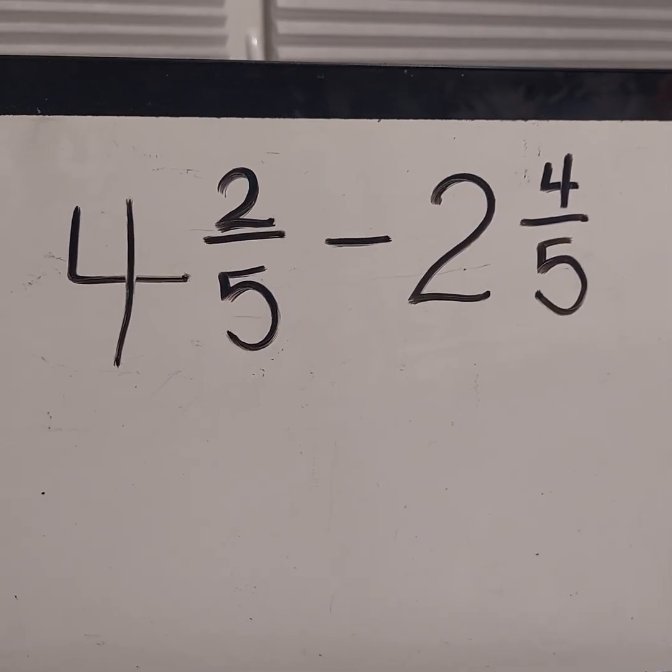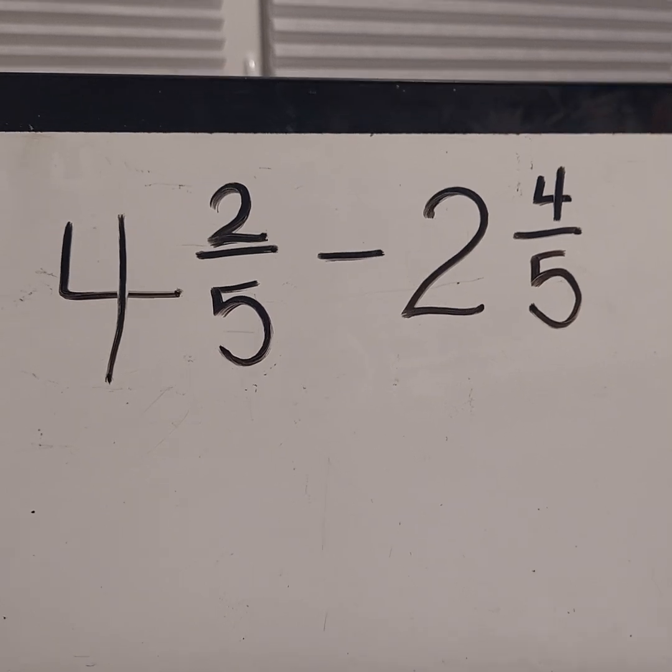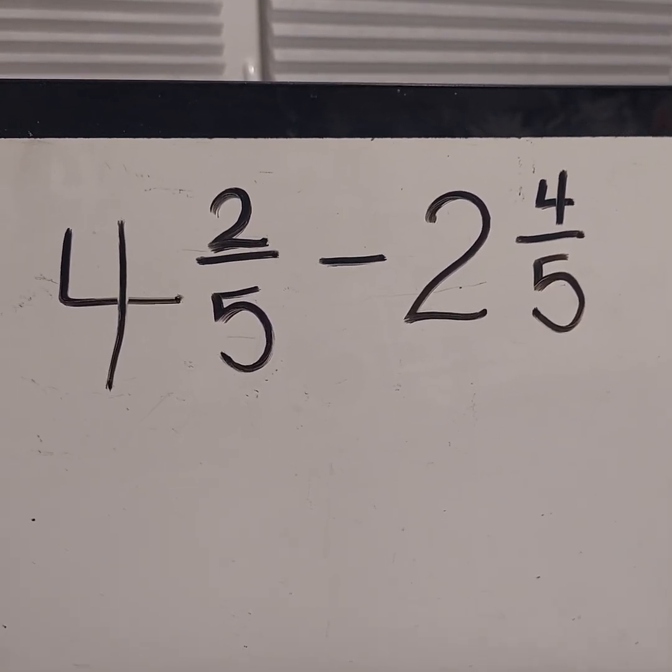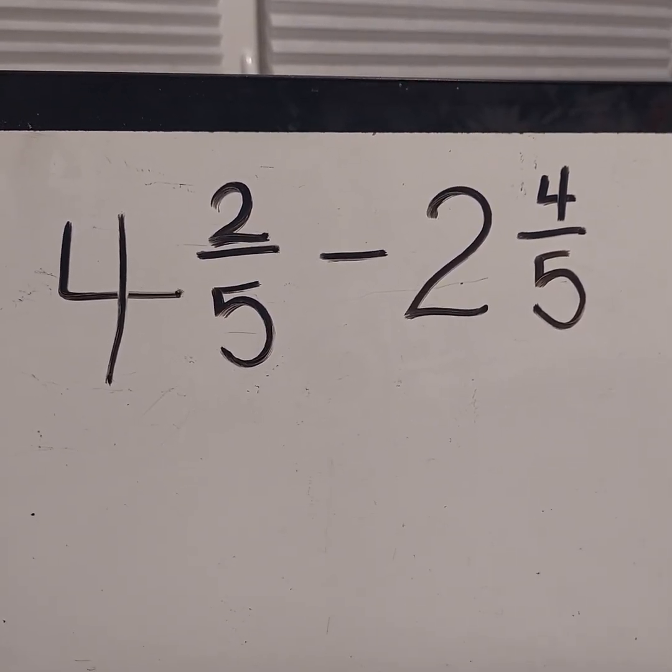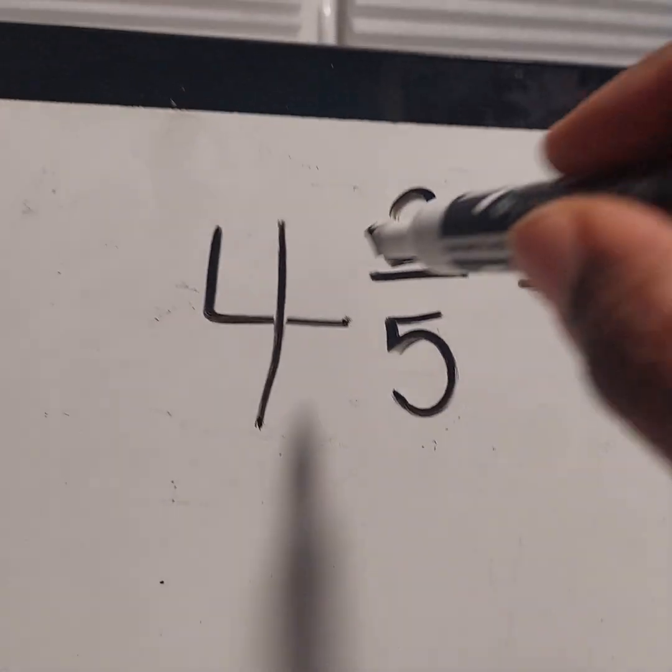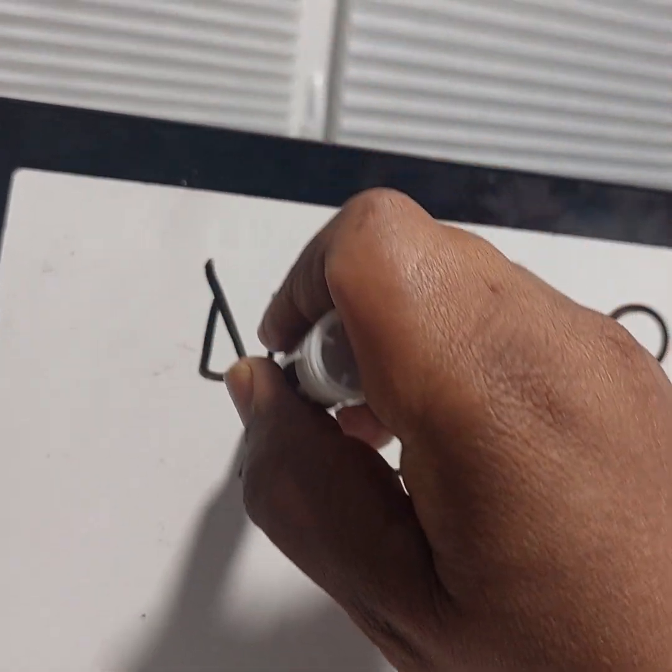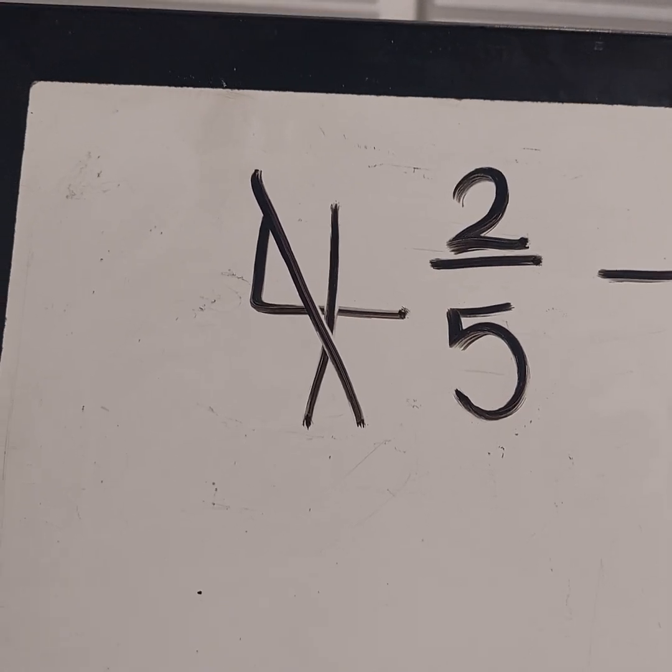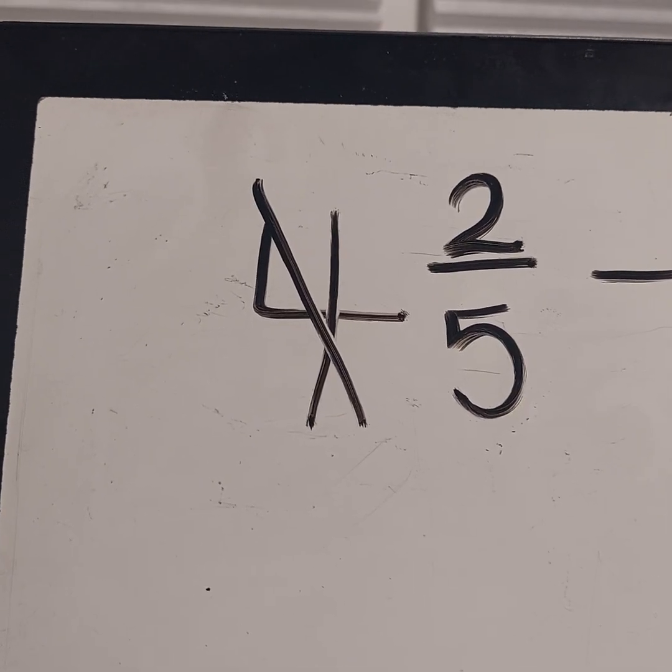So the first thing I want you to take a look at is our regrouping. So let's think about what we're doing. We're going to take away 1 from the 4. If I take 1 from 4, all of you guys know we're going to be left with 3, right? So I'm going to put a 3 here.